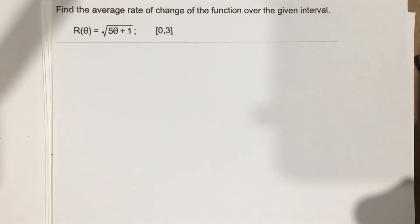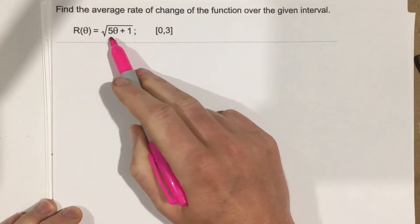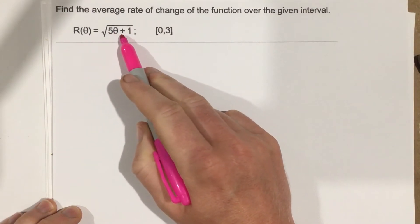This is problem number 3 from section 2.1. In this problem they say, find the average rate of change of the function over the given interval. So they give us a function, which is root 5 theta plus 1.